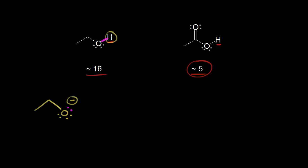Let's draw the conjugate base for acetic acid. If acetic acid donates this proton, then the electrons in magenta are left behind on the oxygen. So the conjugate base would have a carbon double bonded to an oxygen here, with two lone pairs of electrons. And then on the right, we would have another oxygen, this one with three lone pairs. One of those lone pairs would be the electrons in magenta, so that gives this oxygen a negative one formal charge.